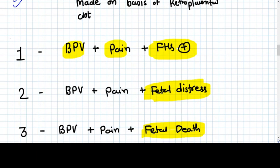Now number one. Number one is what? Bleeding PV, pain in abdomen, FHR is plus. That means the patient comes to you with bleeding PV, abdominal pain and contractions. But if you examine her, you find that the FHR is perfectly fine. That means the baby is good, the baby is alive.